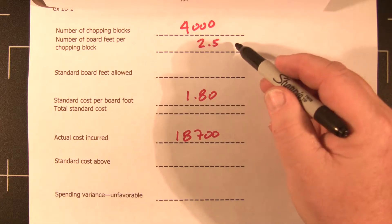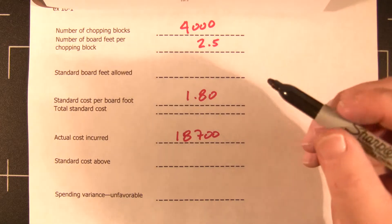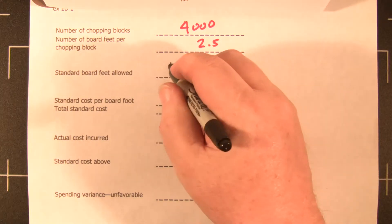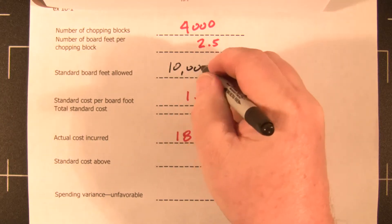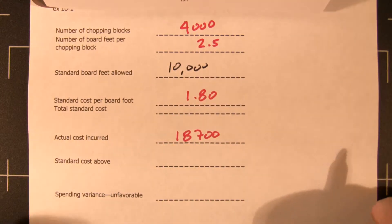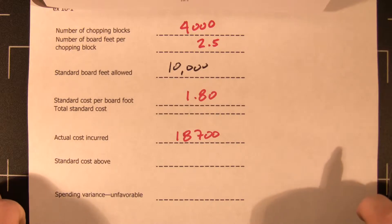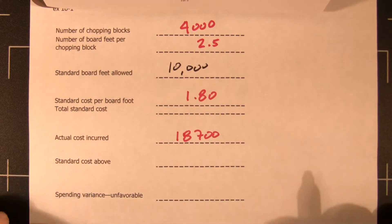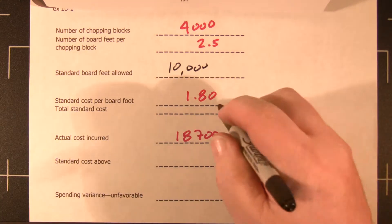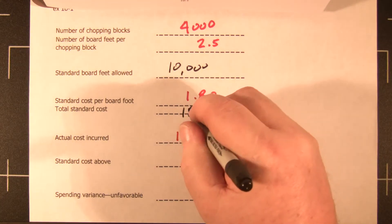Well, if we're going to use two and a half feet per chopping block and we made 4,000 boards, that's 10,000 board feet total. And we need to know how much we spent. Did we spend more or less? We should have spent a total of $18,000.